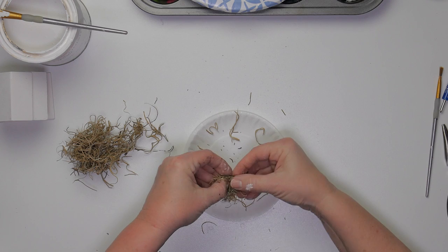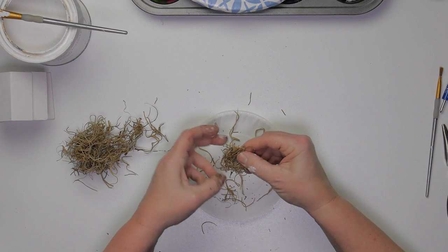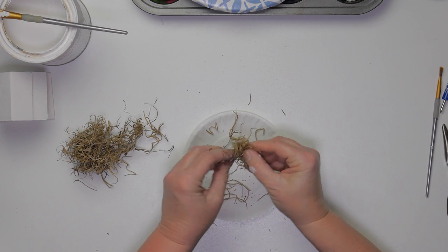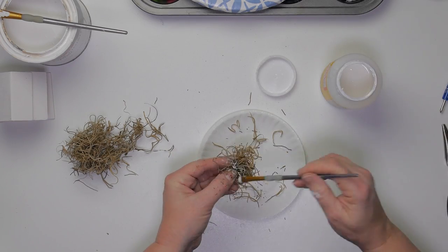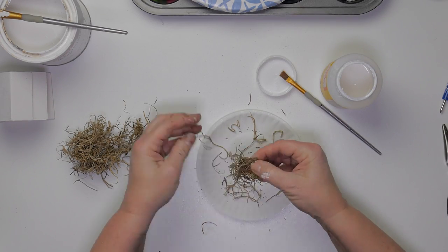For this bird's nest I'm using Spanish moss with some Mod Podge added to keep it together. It's a little sticky to work with but once it's dry it will retain the shape that I want.